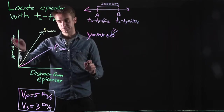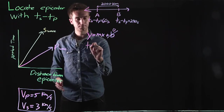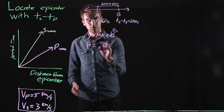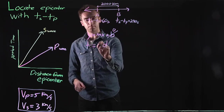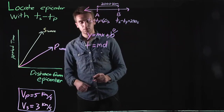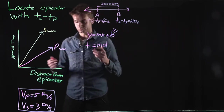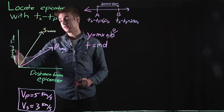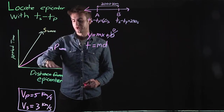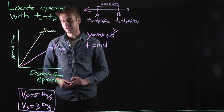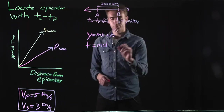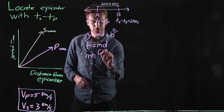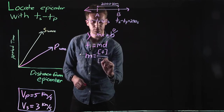So we know y — y is the arrival time — and x is the distance from the epicenter. We need to find m, the slope of the line. Remember, slope is just rise over run. The rise, the change in the y-axis, is the arrival time. And the run, the change in the x-axis, is the distance from the epicenter.